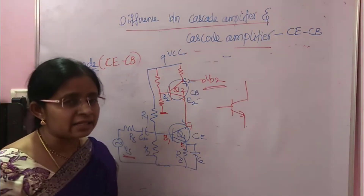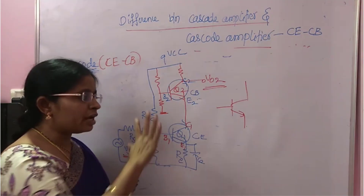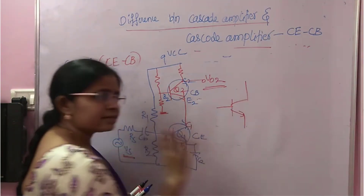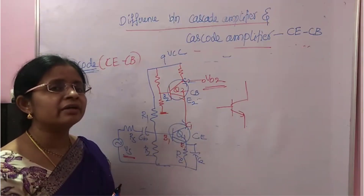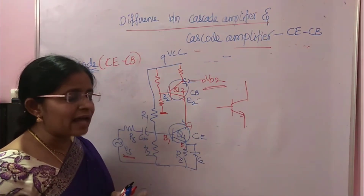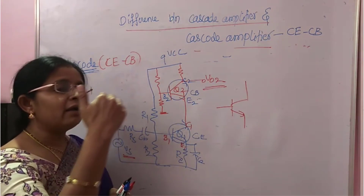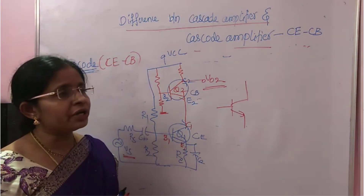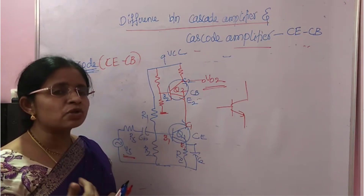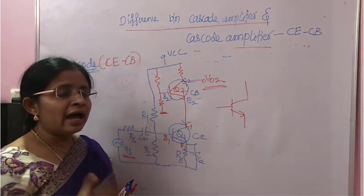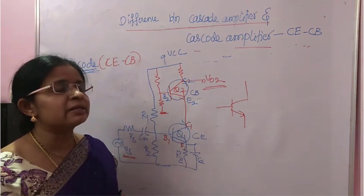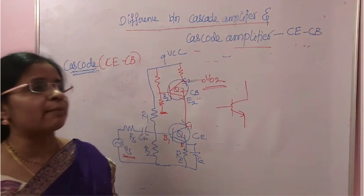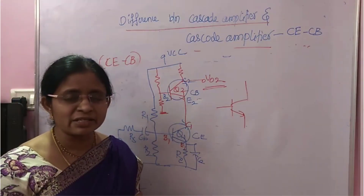So this is the difference between cascade and cascode. If you connect multistages one after the other in series, it is called a cascaded amplifier. Cascode means connecting the second stage on the top of the first stage — that is a parallel arrangement, while cascade means series arrangement. That's all. Thank you very much.